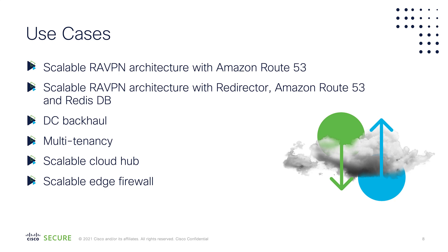We have taken this architecture one step further and added a redirector concept that is coupled with Amazon ElastiCache for Redis database. In this architecture you can load balance traffic based on the least number of sessions connected to a CNFW. You can consider this as an advanced level of RA VPN session load balancing in the cloud. The other use cases for SFCN are data center backhaul, multi-tenancy, scalable cloud hub, and scalable edge firewall.